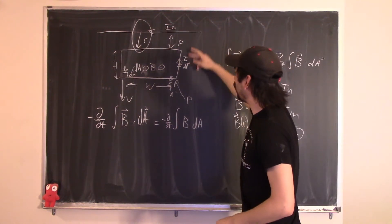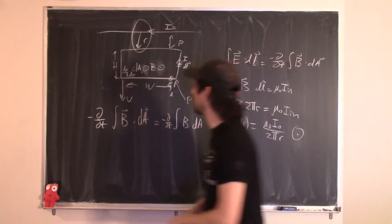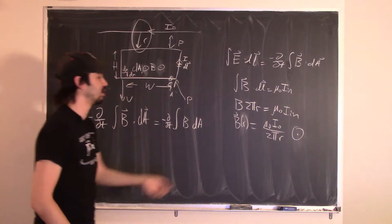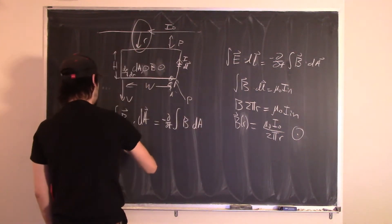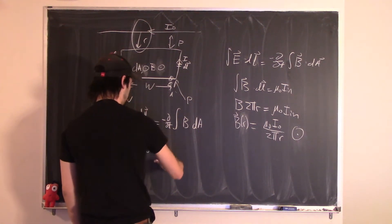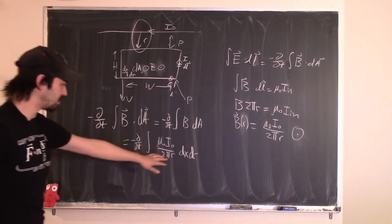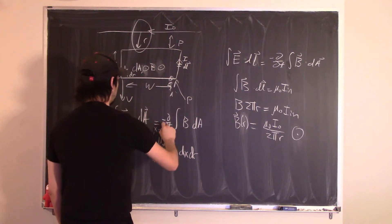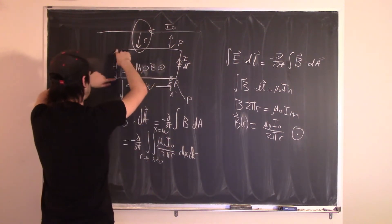Because B varies with distance, we set up a double integral. This is minus partial derivative with respect to time of the double integral of mu-naught I-naught divided by 2πR times dX dR. The limits for X go from 0 to W; the limits for R go from P to P plus H.